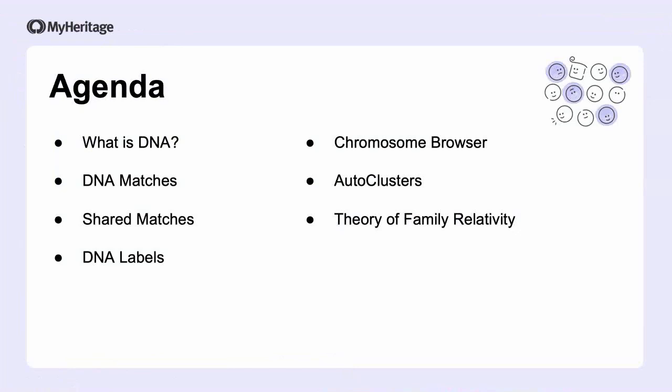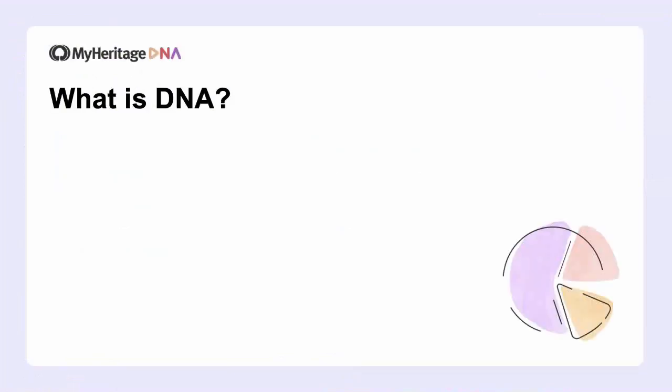We'll delve into the world of DNA within MyHeritage where we'll discuss DNA matches and all the extra information we can get from the review match page, shared matches, the new and immensely helpful DNA labels, chromosome browser, auto clusters, and lastly we'll explain what theories of family relativity are, how we can use them, and also when you can expect new theories. So without further ado, let's start with the basics.